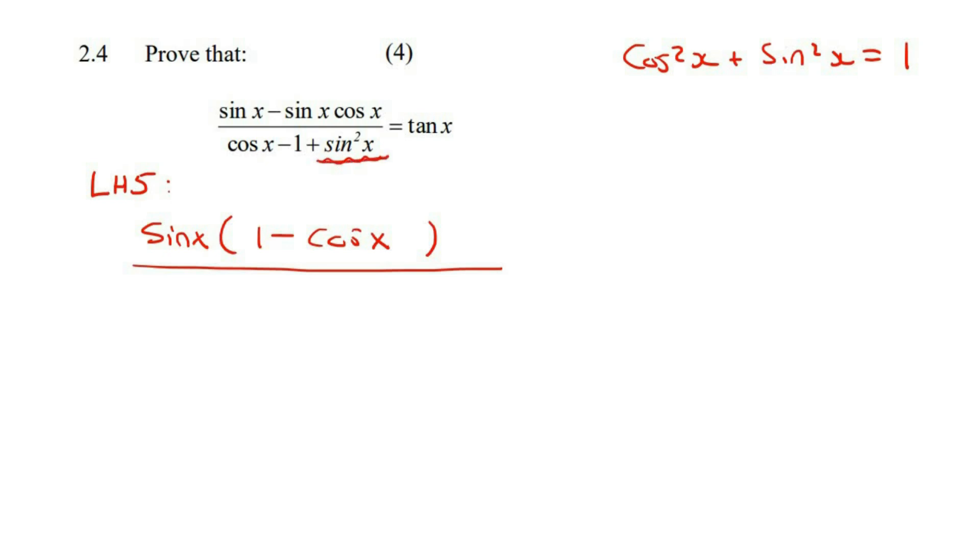So if you had to get sin squared x by itself, there's many ways you could handle this. You could even somehow use this little 1 over here, but it's not necessary. I would get sin squared x by itself, and that's going to be 1 minus cos squared x.